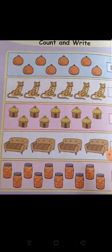Count and write. Count the oranges. 1, 2, 3, 4, 5, 6, 7, 8. Eight oranges. The next, tigers. 1, 2, 3, 4, 5, 6. Six of them. Next, huts. 1, 2, 3, 4, 5, 6, 7, 8, 9. Nine huts.